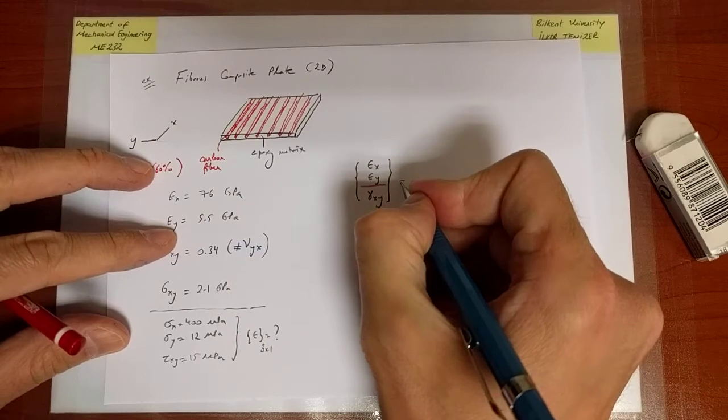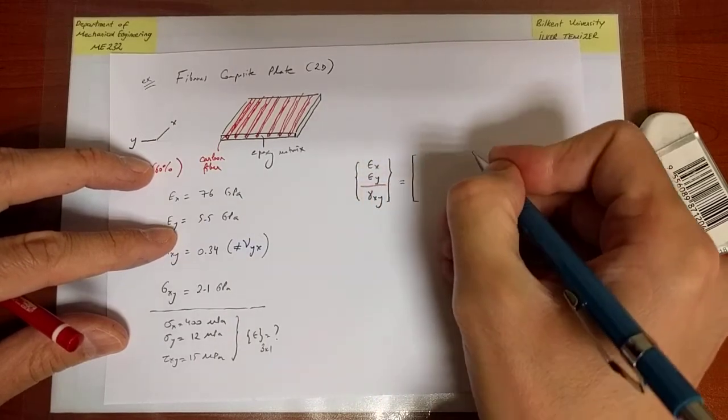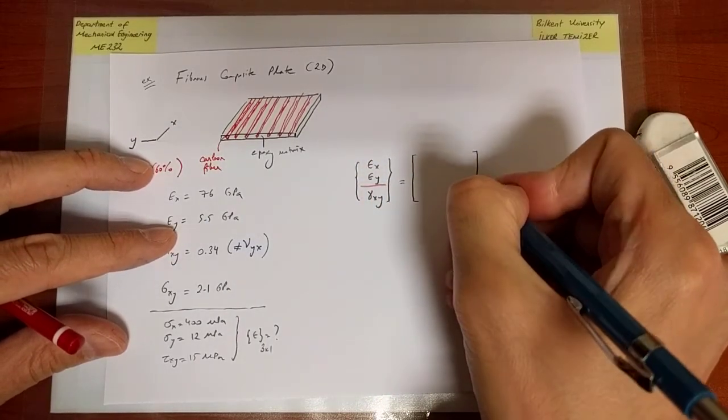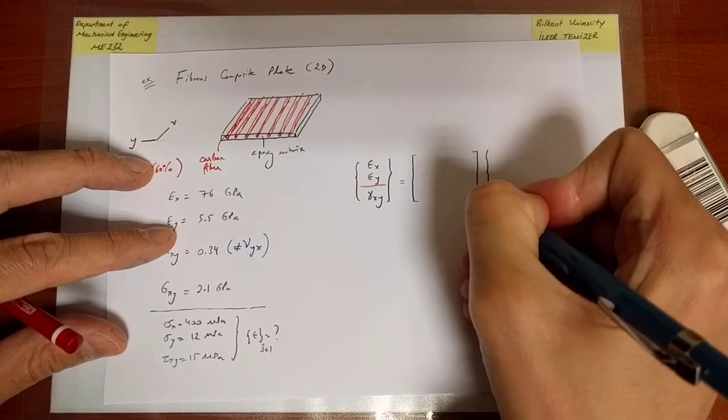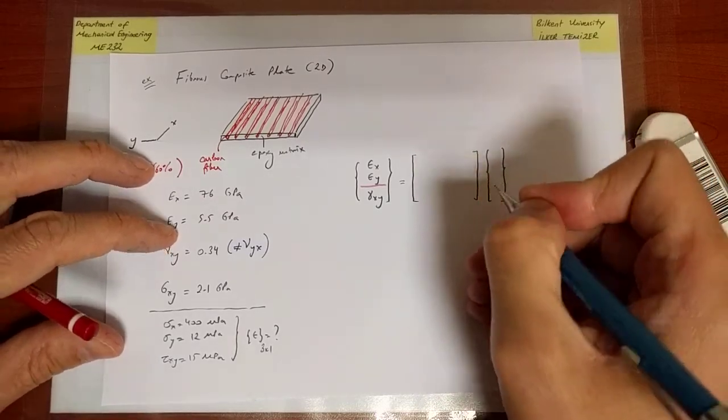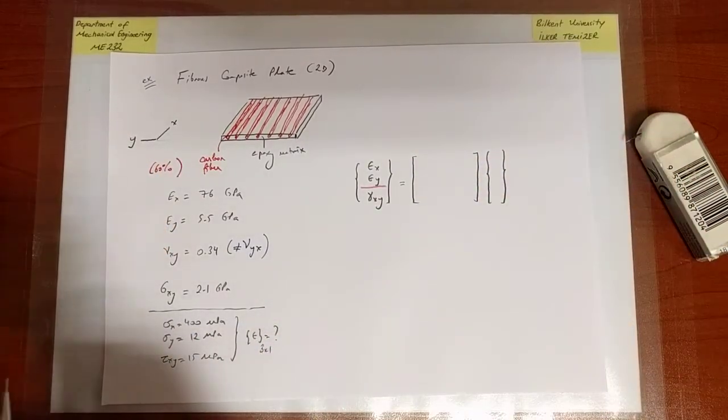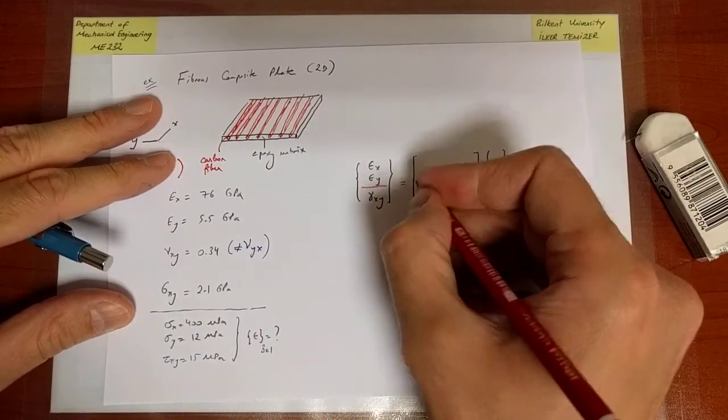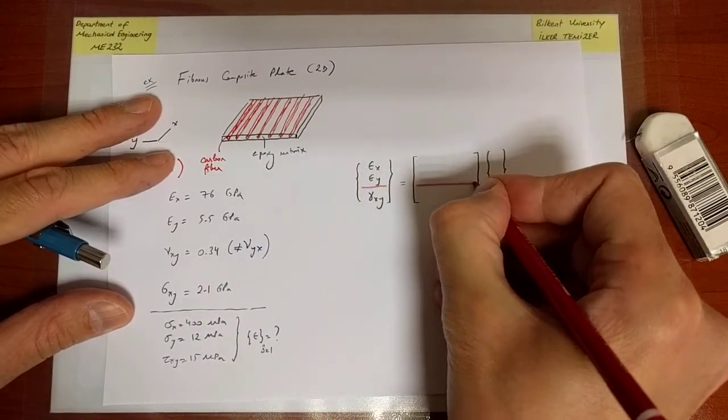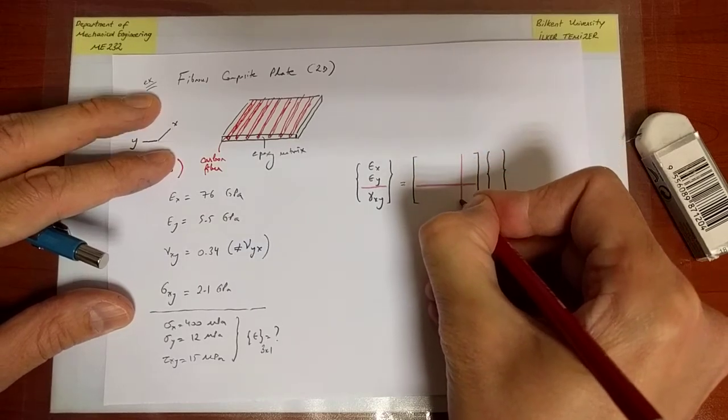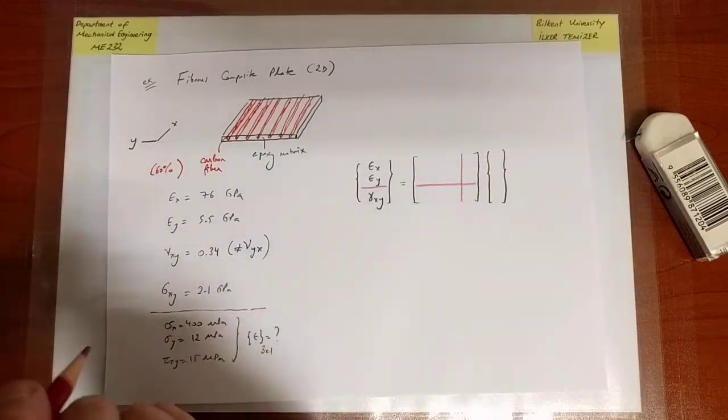The normal components are above, shear components are below. That's equal to a portion of the compliance matrix that only has to do with stresses and strains along x, y. That's the way it's going to look.